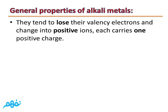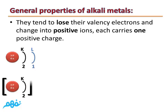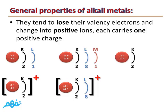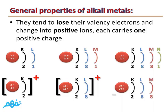The fourth property is they tend to lose their valency electrons and change into positive ions, each carrying one positive charge. For example, lithium atom during chemical reaction loses one electron and changes into a lithium ion. Sodium atom during chemical reaction loses one electron and changes into a positive ion carrying a +1 charge. Potassium atom during chemical reaction loses one electron and changes into a positive ion.